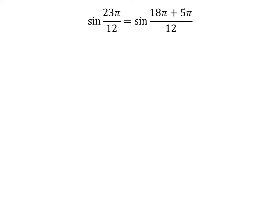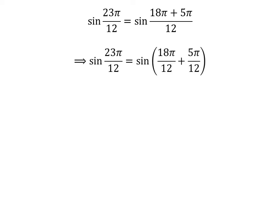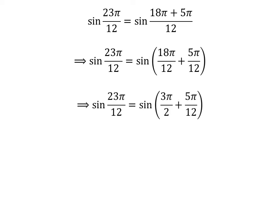23 times pi is equal to 18 times pi plus 5 times pi. So, sine of 23π/12 is equal to sine of (18π + 5π)/12, which can be written as sine of 18π/12 plus 5π/12. Cancelling out the common factors gives us sine of 23π/12 is equal to sine of 3π/2 plus 5π/12.